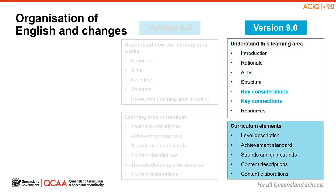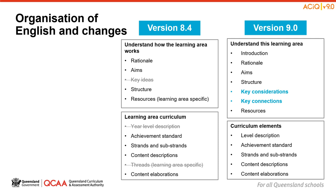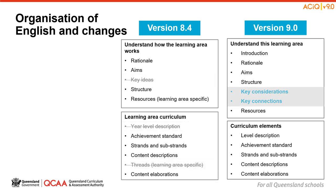Version 9 begins with the Understand This Learning Area section, which provides detail of the intent and a snapshot of the structure. Following the Understand This Learning Area is the Curriculum Elements section, which shows the content associated with English. Other variations between Version 8.4 and Version 9 are indicated by changes struck out, and bolded in blue — new sections which include the Key Considerations and Key Connections. These will, at different times, influence planning.